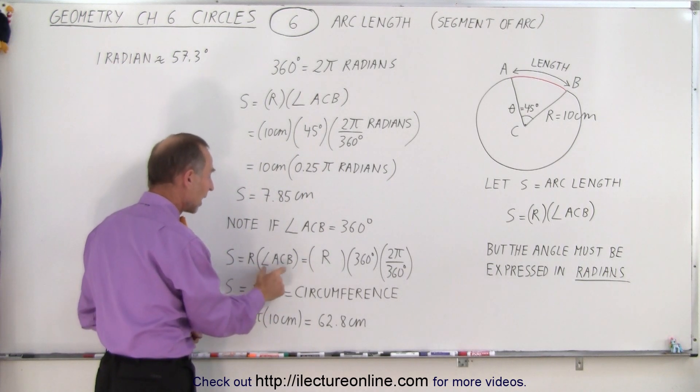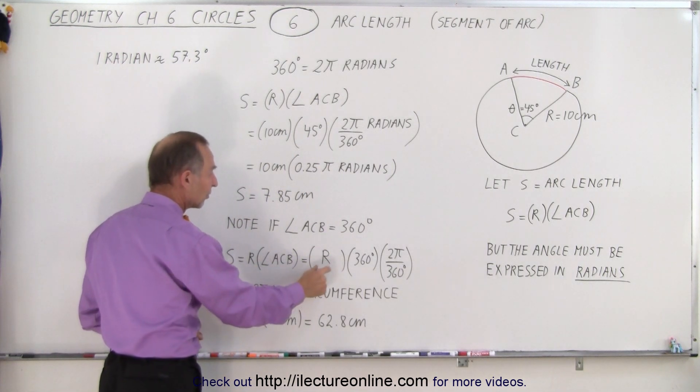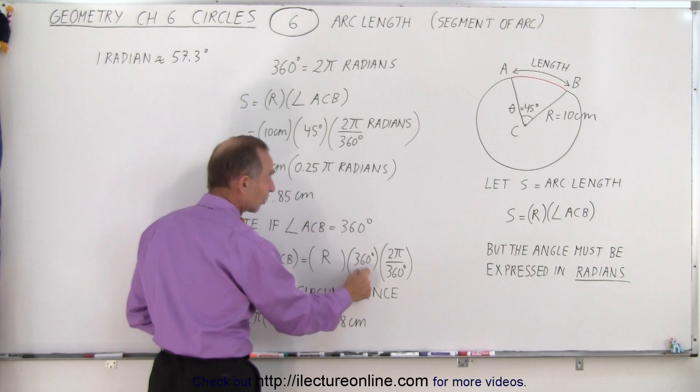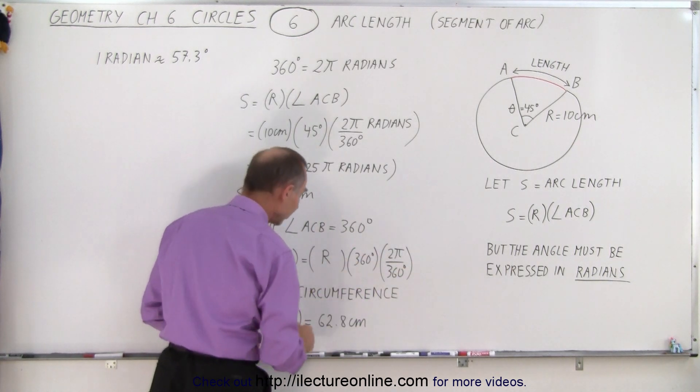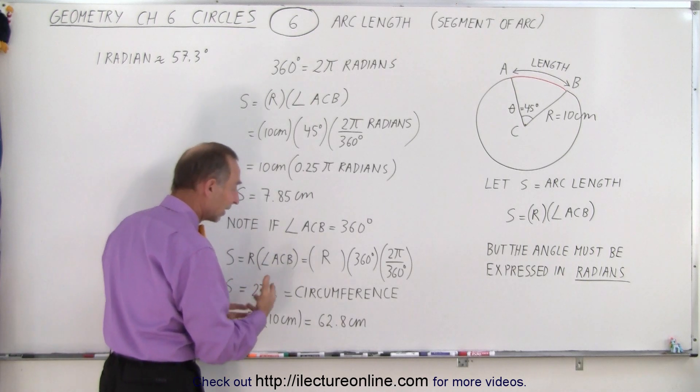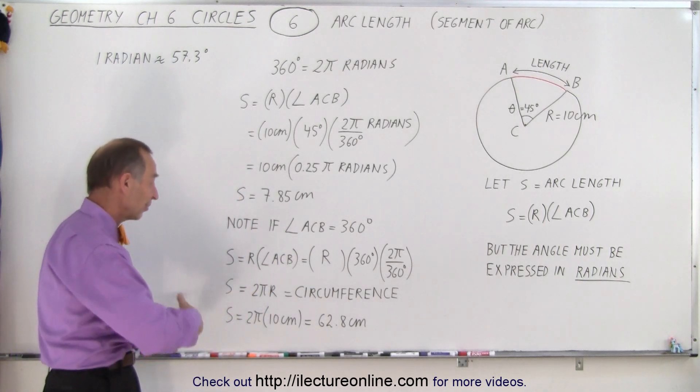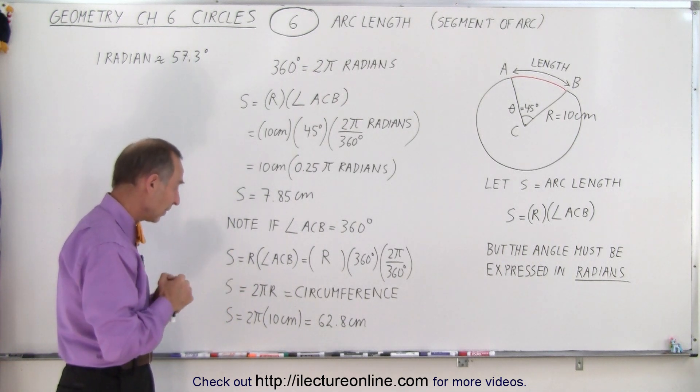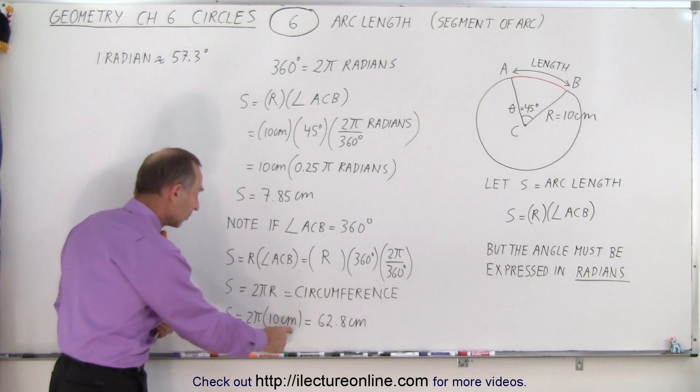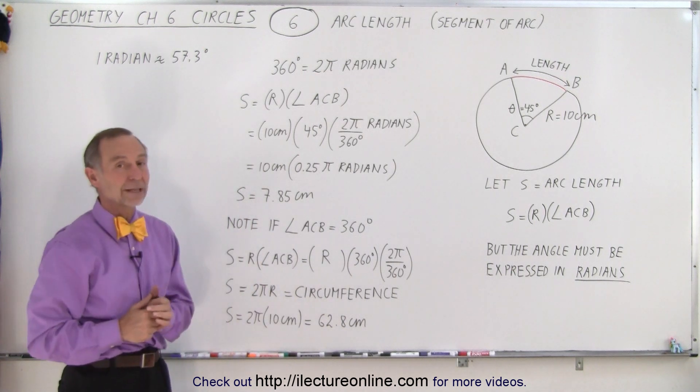But it still would be the radius times the angle. In this case, the radius times 360 degrees converted to radians. 360 degrees cancels out, so we end up with 2 pi r, and that's exactly the equation we need for the circumference of the circle. That's essentially where that came from. That's the concept. And so it's 2 pi times the radius to give us 62.8 centimeters.